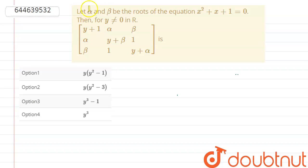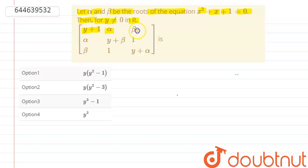Hello friends. Here the question is: let alpha and beta be the roots of the equation x² + x + 1 = 0. Then for y not equal to 0 in R, find the determinant of the matrix with entries y+1, alpha, beta; alpha, y+beta, 1; beta, 1, y+alpha. We have to find the determinant of this matrix and select the correct option.